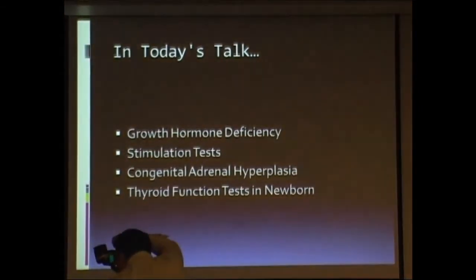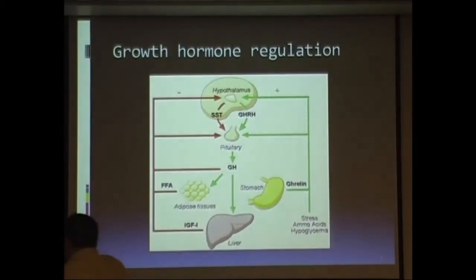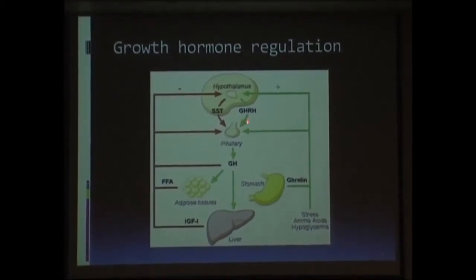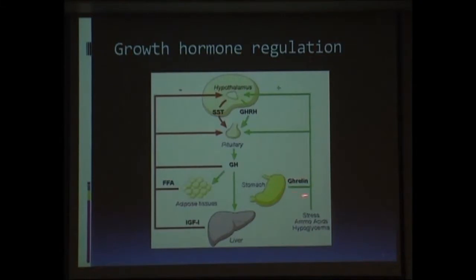Before we start with stimulation tests, let us have a look at the basis of growth hormone regulation. Growth hormone is secreted from the hypothalamus in response to GnRH, which acts on the pituitary to cause release of growth hormone. This acts on adipose tissue and causes storage of free fatty acids. It acts on the liver to cause generation and release of IGF-1. We also know that there is a hormone called ghrelin, released from the stomach, which has a role in nutrition and indirectly affects growth.